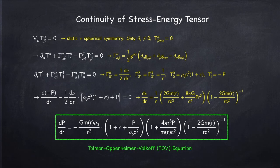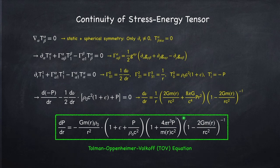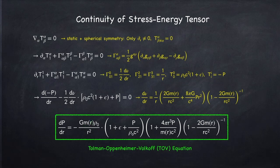This equation is called the TOV equation, which is shorthand for the Tolman-Oppenheimer-Volkoff equation. In the Newtonian limit, when all the correction terms in the parentheses are small, all parentheses reduce to 1, and we're left with dP/dr equal to this term — the equation found in Stellar Physics 3A for hydrostatic equilibrium in Newtonian gravity, where the mass is just the rest mass M0. Just like in Newtonian gravity, if we want to solve this equation, we need an equation of state relating the pressure to the density.